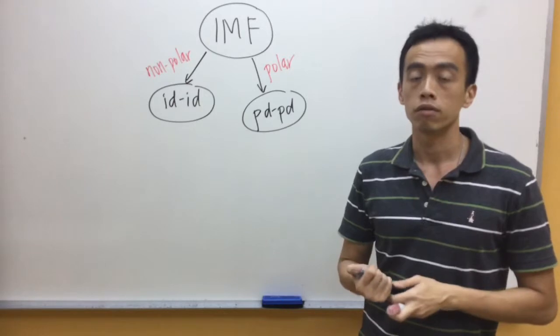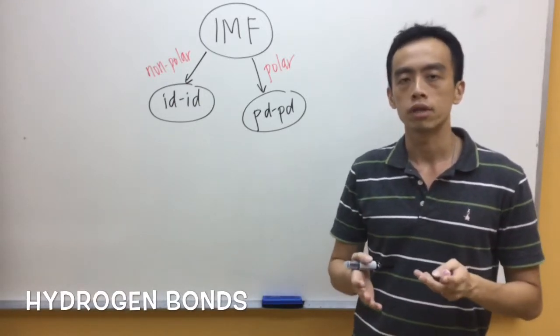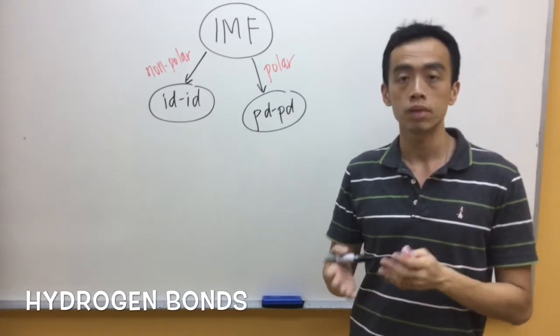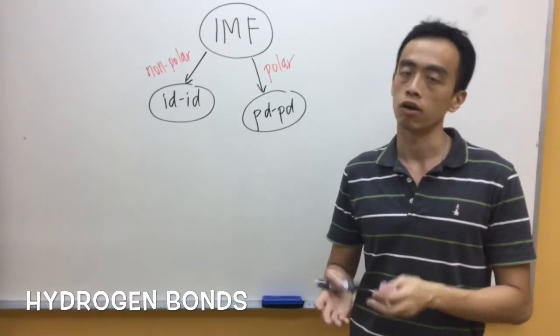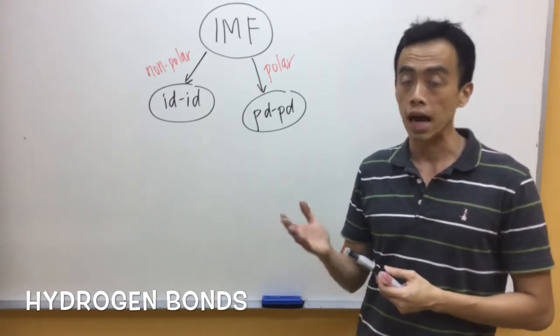Now, the third type of intermolecular interaction are our hydrogen bonds. Now, what we need to take note of is actually hydrogen bond is an extreme type or a very, very strong type of permanent dipole-permanent dipole interaction. So, my preference is to classify under PDPD.